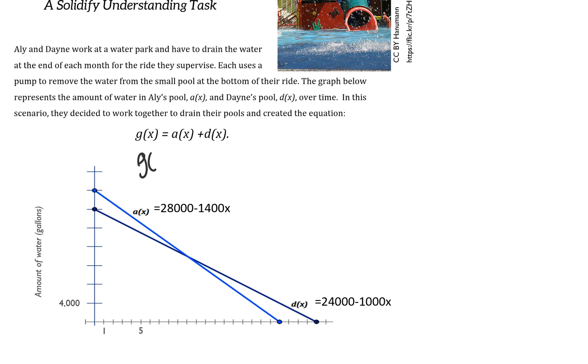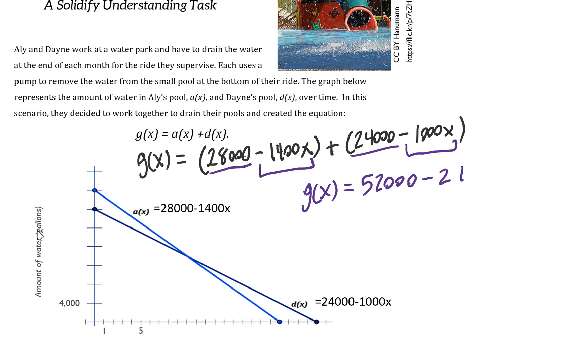From that we can create this new equation G(x), which comes from adding those two equations. By combining like terms, I can create the new equation: 28,000 plus 24,000 is 52,000, and negative 1,400x minus 1,000x is negative 2,400x.